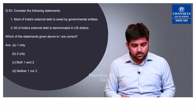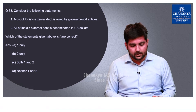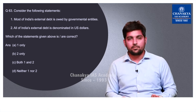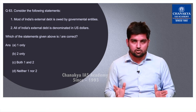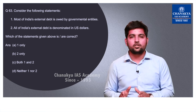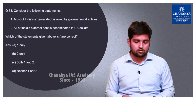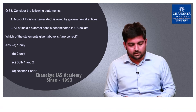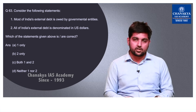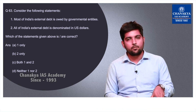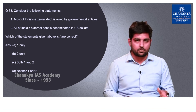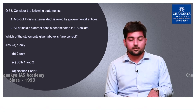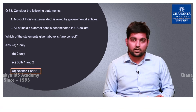Question number 63 contains two statements about India's external debt. The first — that most of India's external debt is owed by government entities — is completely wrong because the private sector also holds a large amount through external commercial borrowings. The second — that all of India's external debt is denominated in US dollars — is also wrong, as debt is also held in Indian rupees and SDRs. So the correct option is D — neither one nor two.